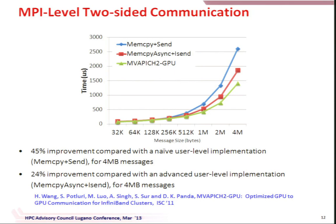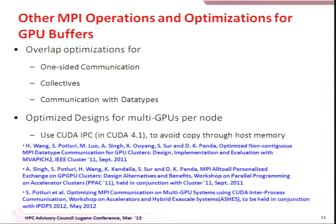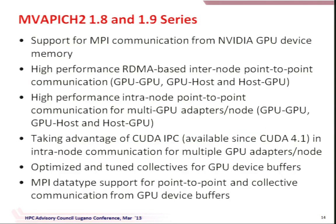We first presented this at ISC '11, about one and a half years ago. The blue line is the naive implementation, the red line is the user-level async pipeline, and ours was the initial design inside the MPI library. We saw about 45% improvement for large messages and about 24% improvement even compared to the advanced user's pipeline design. We then extended this to one-sided communication, collectives, communication with data types. NVIDIA also provided us a grant to take these published designs into the MVAPICH2 tool.